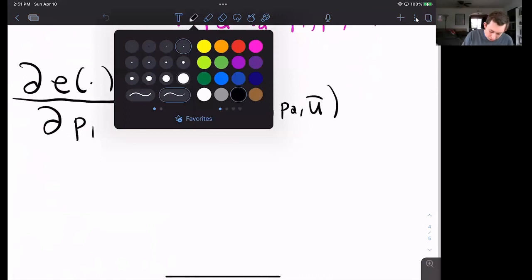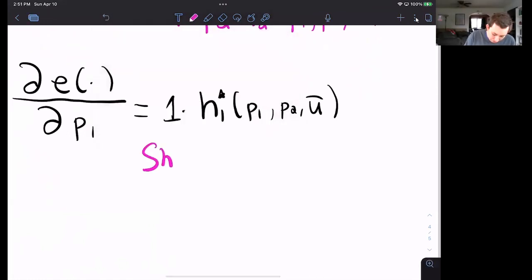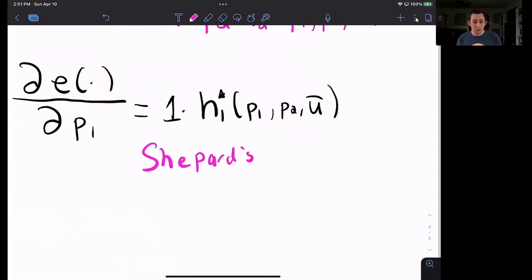And this is what we call Shepard's Lemma. Shepard's Lemma allows us to get the Hicksian demand from the expenditure minimization function directly, which is super nice. So that is Shepard's Lemma for good one.